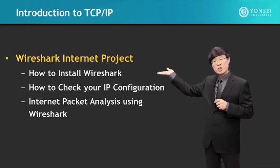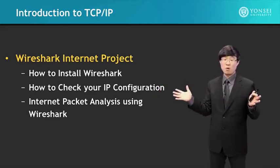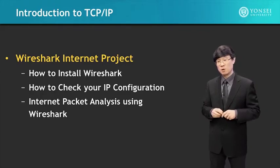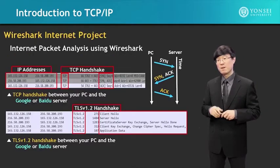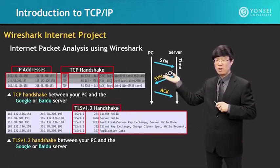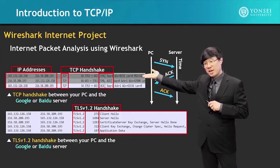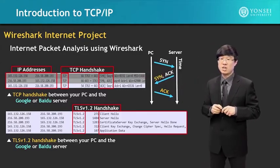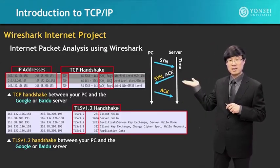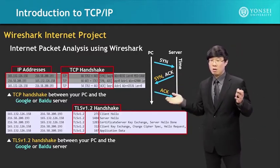Using the Wireshark program that we installed, we're going to use it to analyze the overall Internet connections that we've been using so far. One snapshot of a Wireshark capture shows actual action going on through the Internet connection and your PC — you can see the source IP address, destination IP address, including the TCP handshake. In addition, the TLS security handshake operations are also shown.